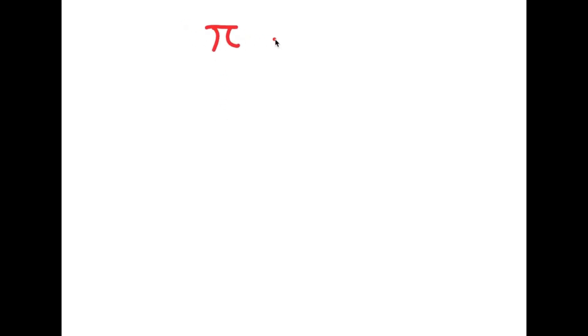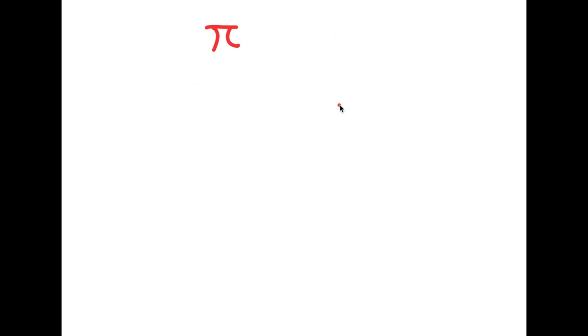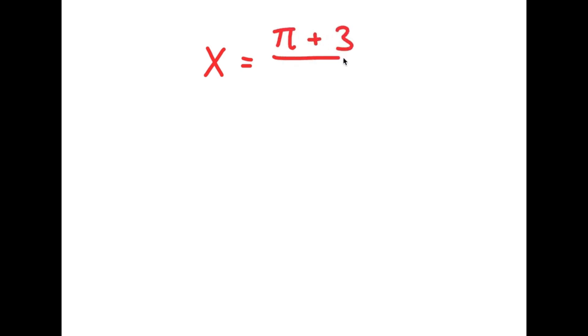So in this video, I'm going to be proving to you guys that pi is equal to 3. As you probably already know, pi is an irrational number, meaning it doesn't have a whole number value — it's actually equal to 3.14159 and on and on forever. So in this video, I'm going to be proving that pi is actually equal to 3. What I'm first going to do is start with the statement: x is equal to pi plus 3 over 2.